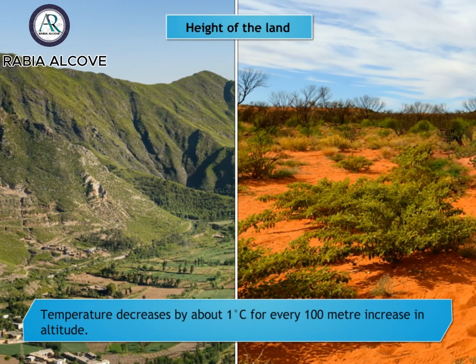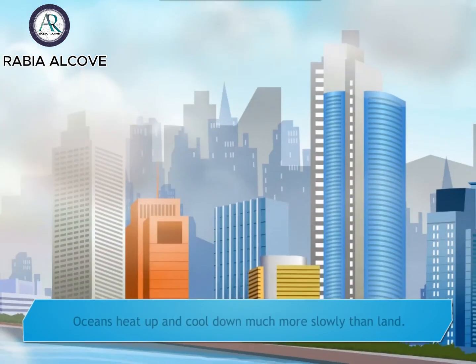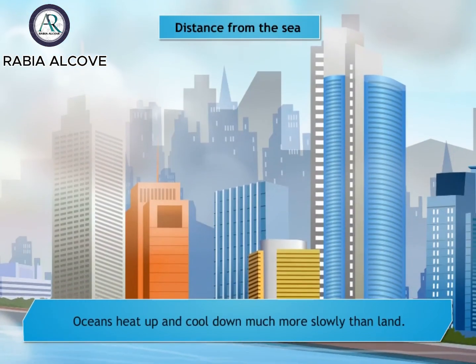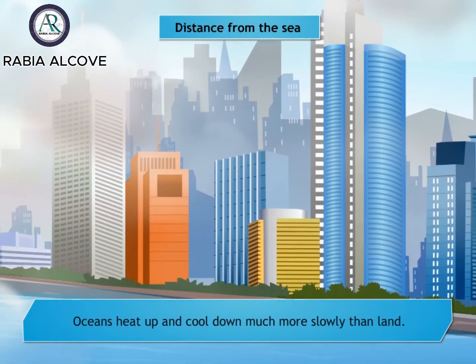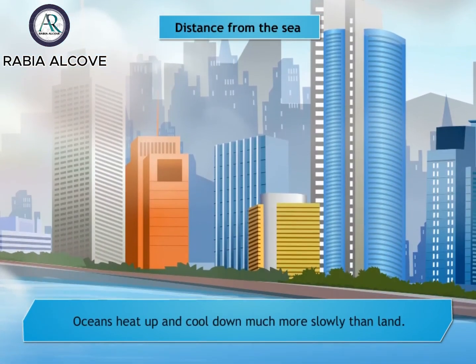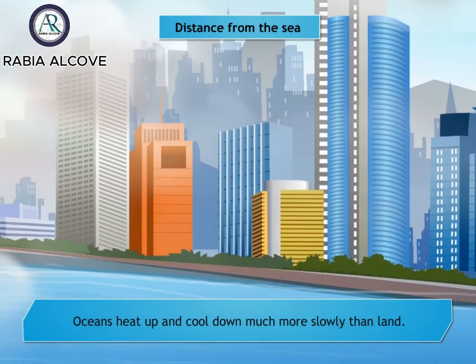Oceans heat up and cool down much more slowly than land. This means that coastal locations are cooler in summer and warmer in winter.